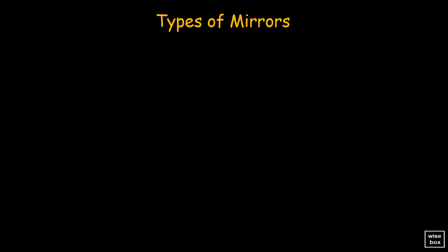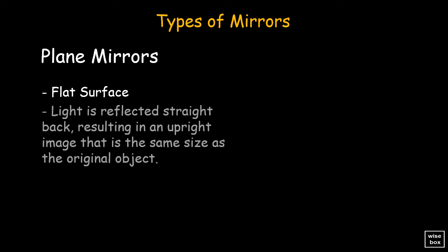First we have the plain mirror. It has a flat surface. In here, light is reflected straight back, resulting in an upright image that is the same size as the original object.